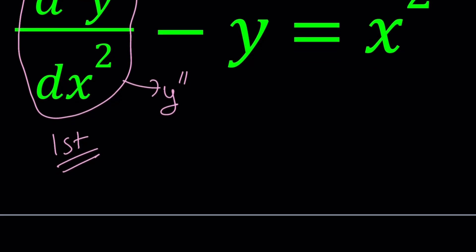Let's see how the homogeneous version works. I'm going to write it as y double prime minus y equals zero. This would be considered the homogeneous equation, and these kinds of equations are pretty easy to solve. They're very standard, and what we do is use a characteristic equation to solve them — kind of like difference equations or recurrence relations.